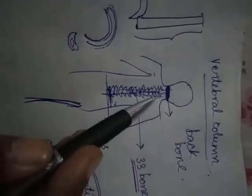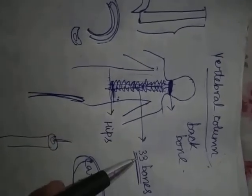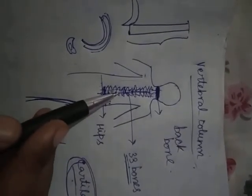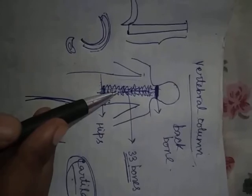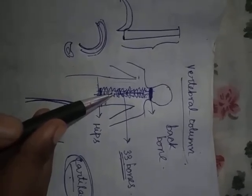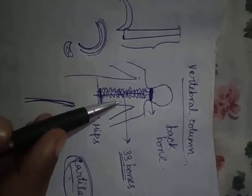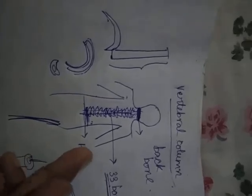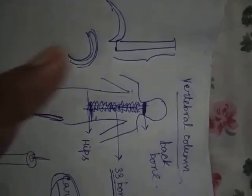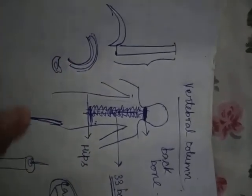The vertebral column is made up of 33 bones and these bones are connected with each other through cartilages. This vertebral column is very flexible, and that's why we can easily bend our body or bend our back.